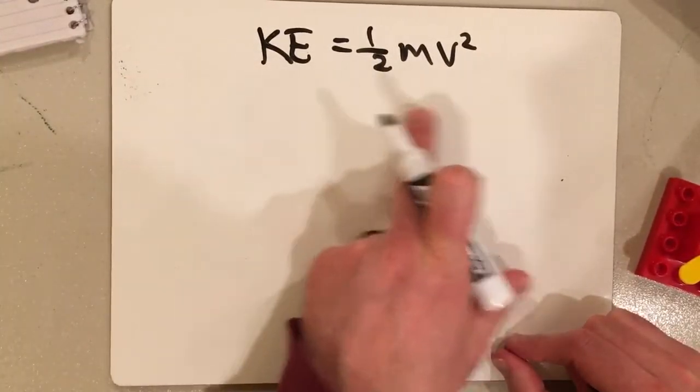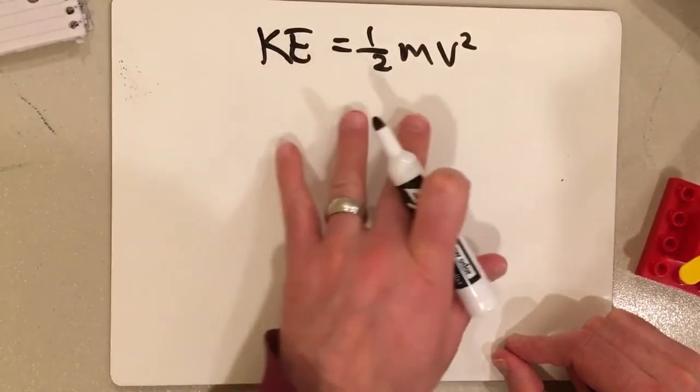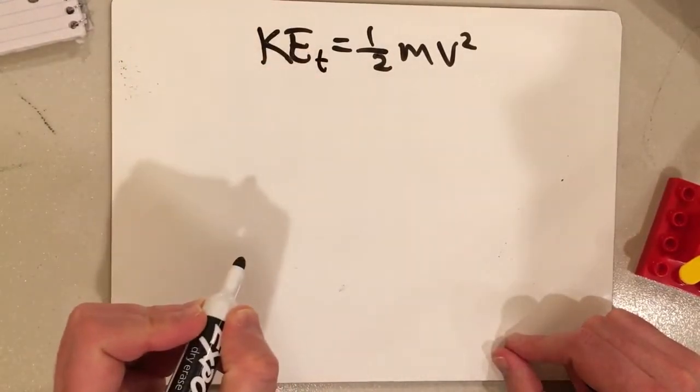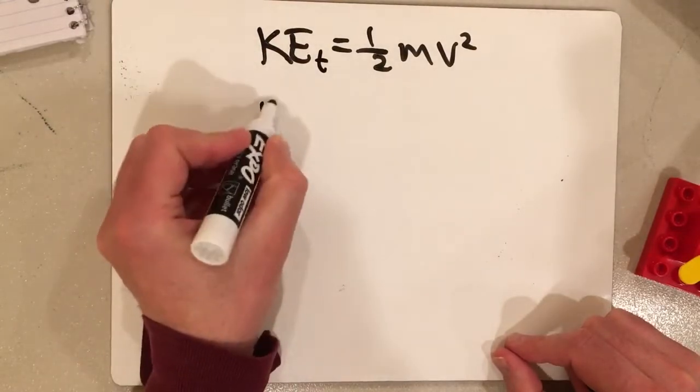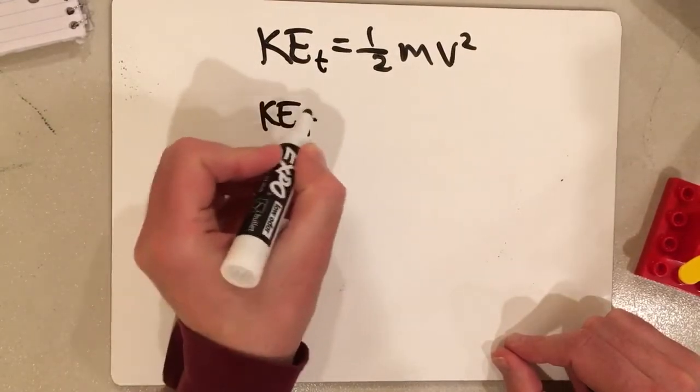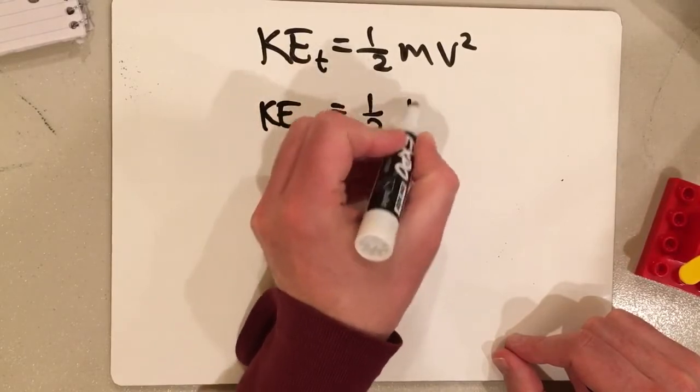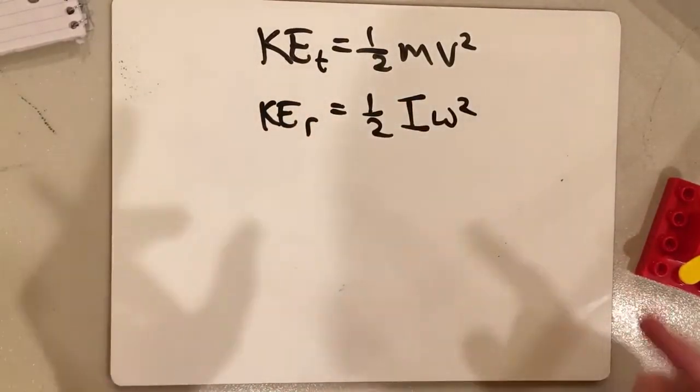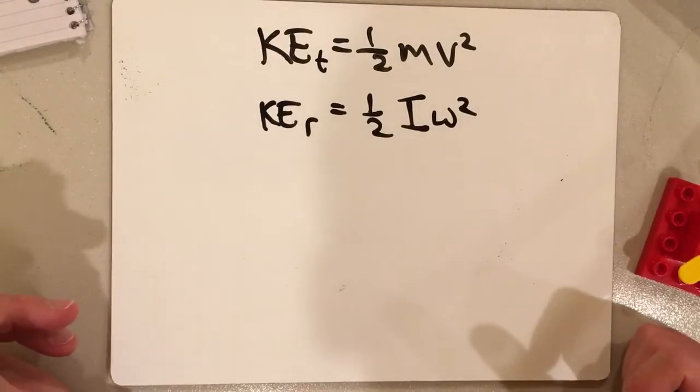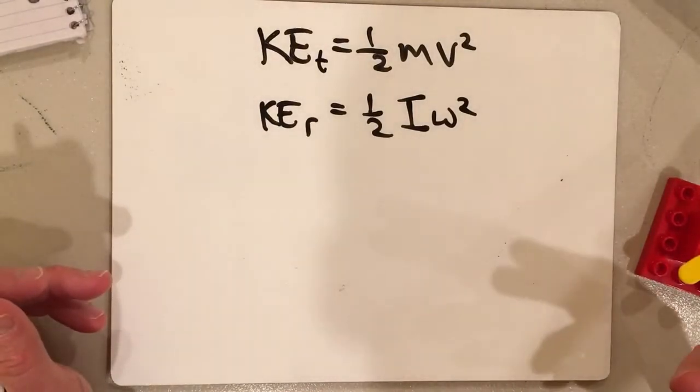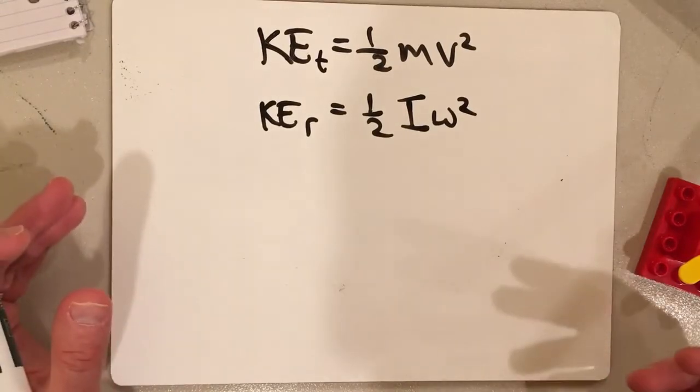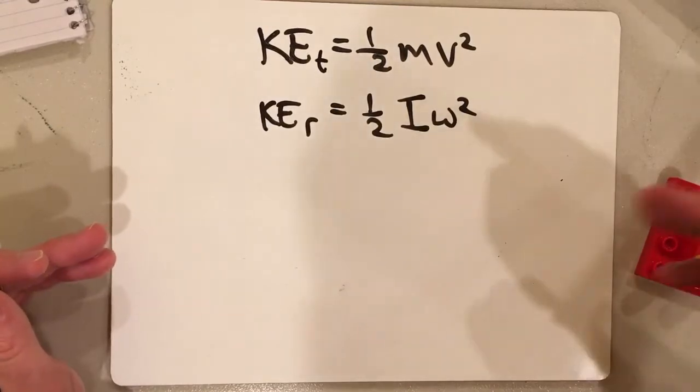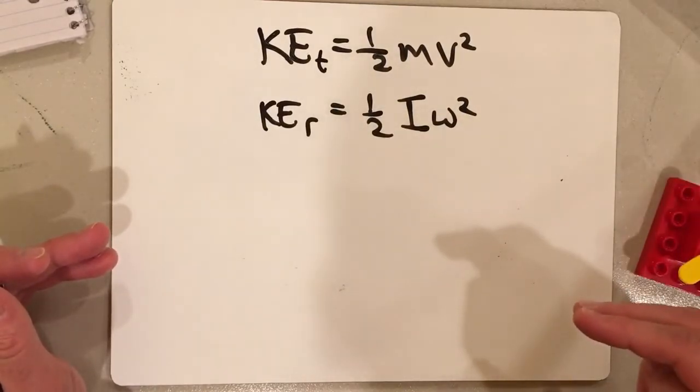To begin with, this formula here, which is the kinetic energy due to the position changing, is called translational kinetic energy. And our new formula is going to be for rotational kinetic energy. So please note, we now have two different types of kinetic energy that we need to account for. Just like we have two different types of potential energy that we are accounting for. We have spring potential energy and gravitational potential energy. And now, we have translational kinetic energy and rotational kinetic energy.